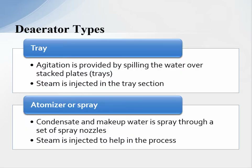There are two types of deaerators. The first is the tray type, where agitation is provided by spilling water over stacked trays. Steam is injected into the tray section to bring the temperature up and let the non-condensable gases come out of solution. The other type is the atomizer, where condensate and makeup water are sprayed through spray nozzles, usually hitting a diffuser, and steam is injected to bring the temperature up and let the gases come out of solution. Either tray or spray should be able to bring the dissolved oxygen content down to seven parts per billion.